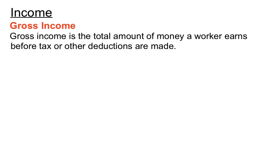Gross income — that's the total amount of money a worker earns before tax and before other deductions are made. That's the total amount that is quoted as this person earning a certain amount. But it's kind of funny because they don't end up getting to spend that amount, because tax needs to be taken out and other deductions need to be made from that gross income.